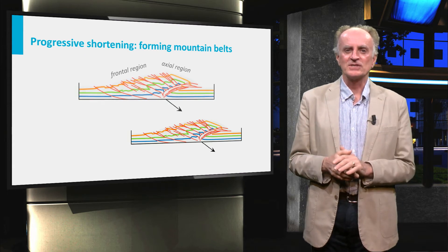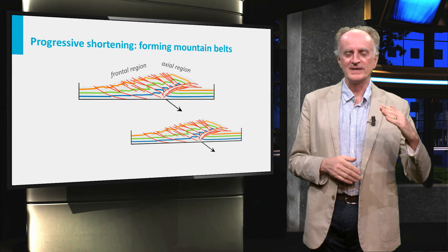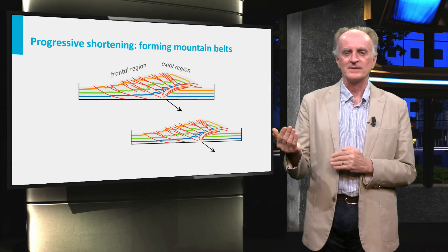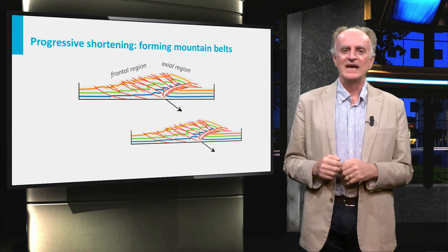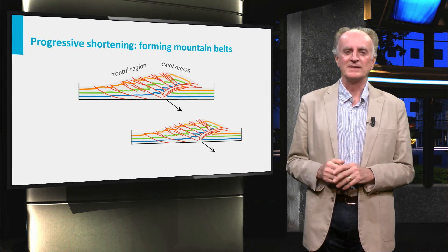The resultant orogen has two very different parts, the frontal and the axial regions. Rocks in the two domains have experienced different paths and will look very different.